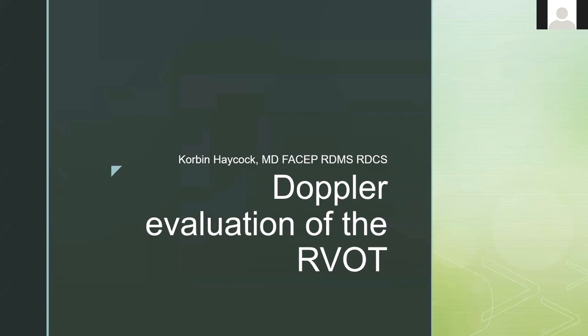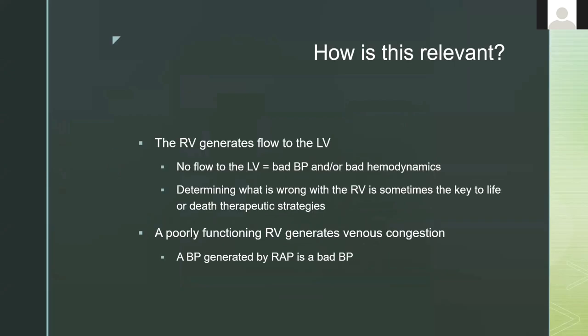This is a talk on Doppler evaluation of the right ventricular outflow tract. It's a little bit of advanced material, but not too hard to learn. You should care about this because the right ventricle generates flow to the left ventricle, and if you don't get enough flow to the left ventricle, you're going to have bad blood pressure and hypotension. Figuring out what's going on with the RV helps you determine what you need to do to get the RV working.